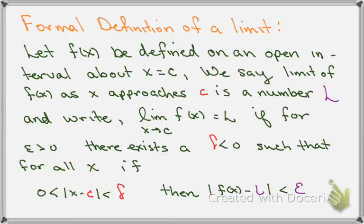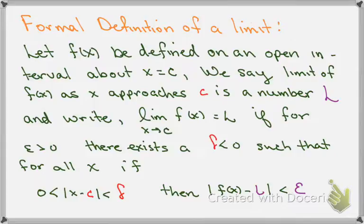Let's look at the formal definition of a limit — it looks daunting but it really isn't. The formal definition says: let f of x be defined on an open interval about x equals c, our limit point. We say the limit of f of x as x approaches c equals a number L if for every epsilon greater than zero, there exists a delta greater than zero such that for all x, if the absolute value of x minus c is greater than zero and less than delta, then the absolute value of f of x minus L is less than epsilon.